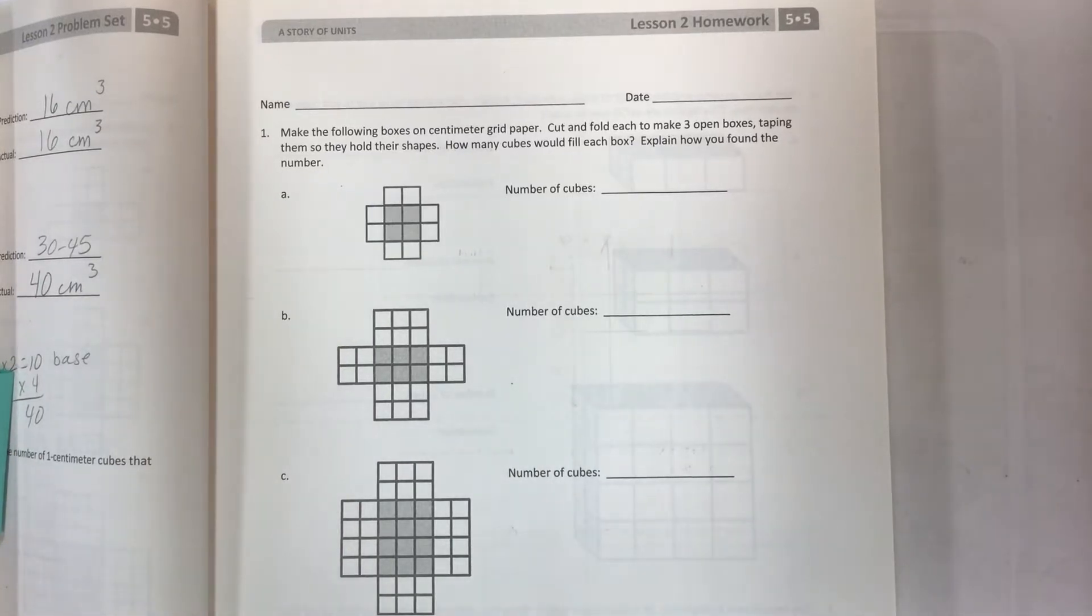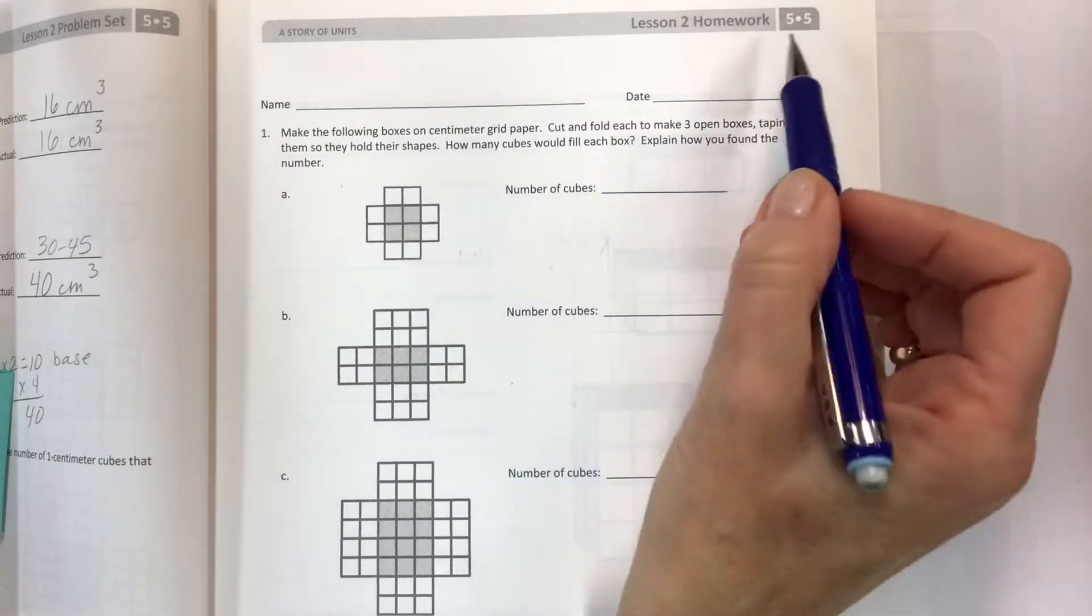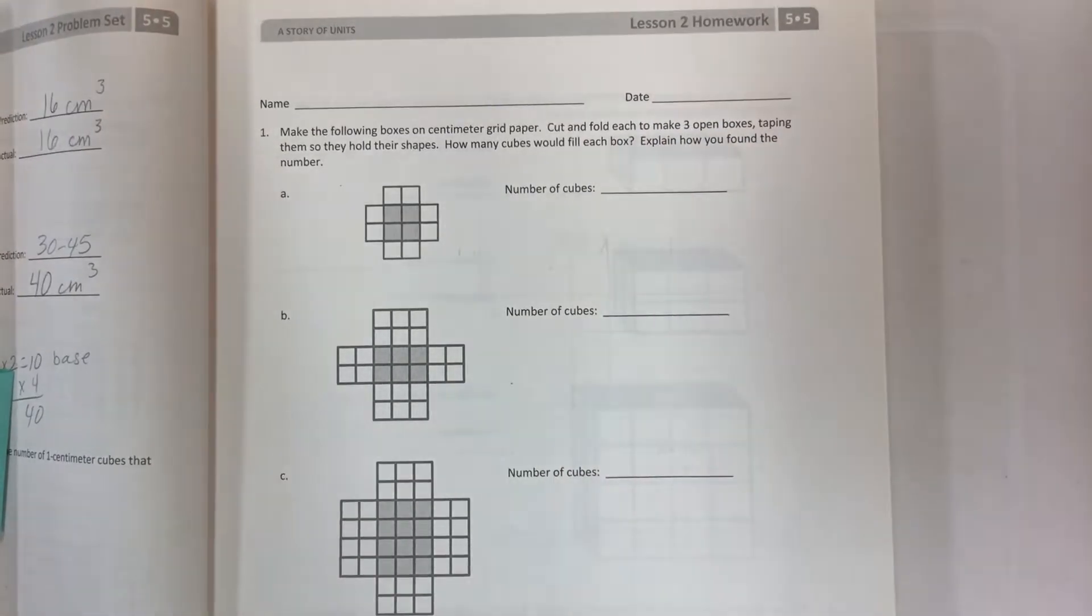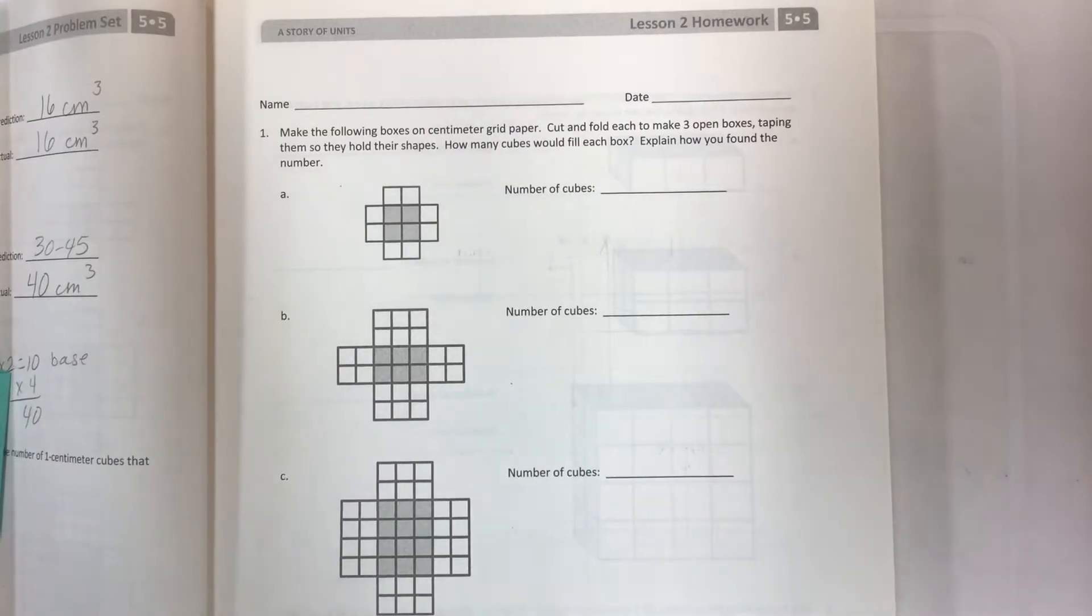Hey kids, welcome to another math video. This is for Eureka Math Grade 5, Module 5, Lesson 2 homework. The objective here is to find the volume of a right rectangular prism by packing with cubic units and counting.